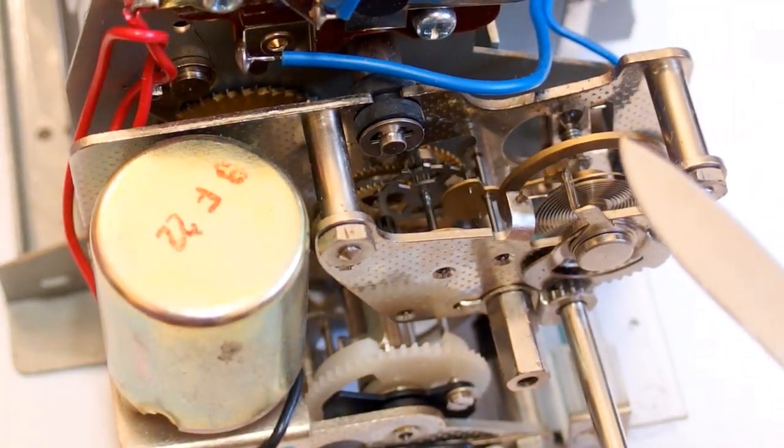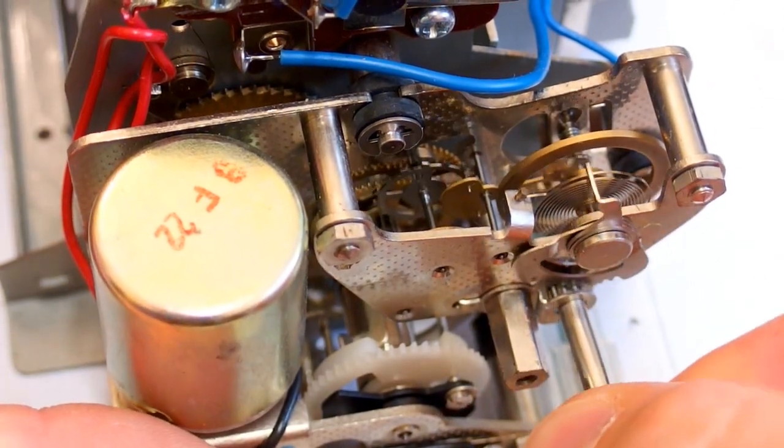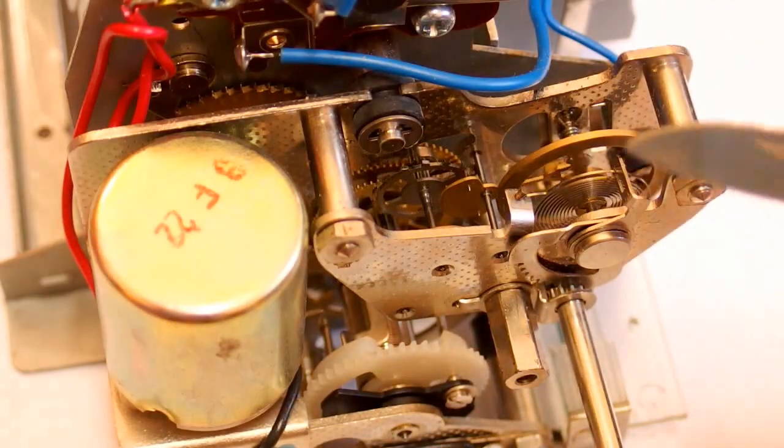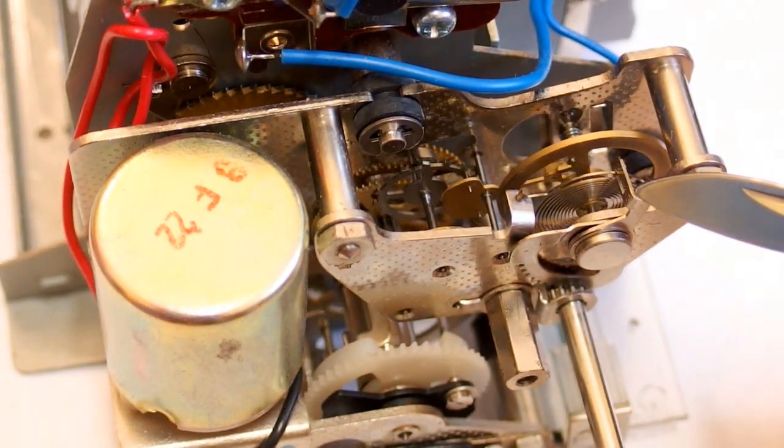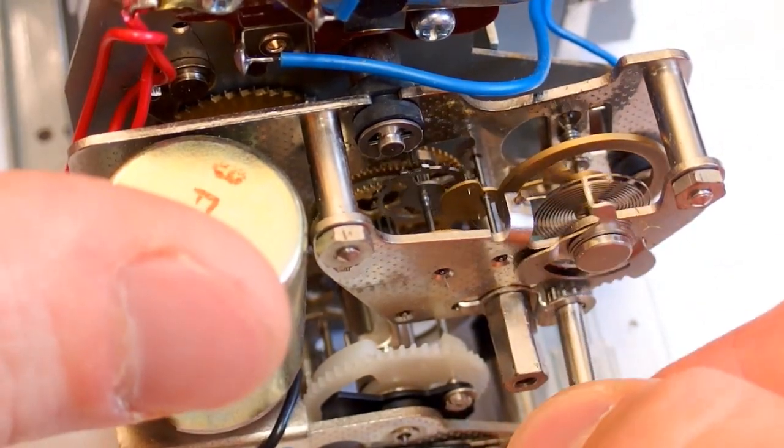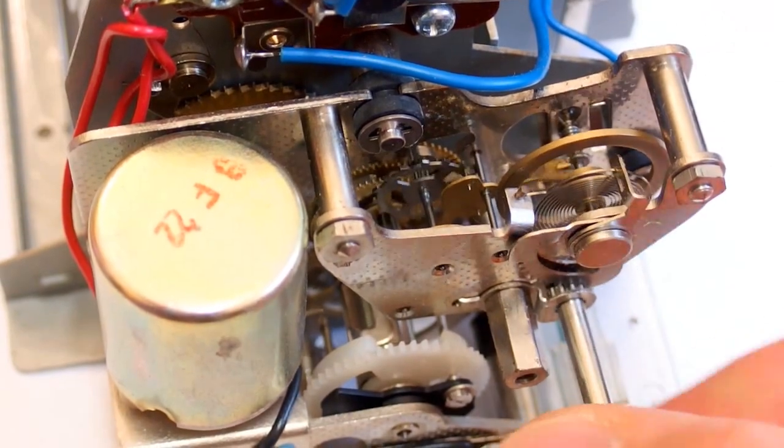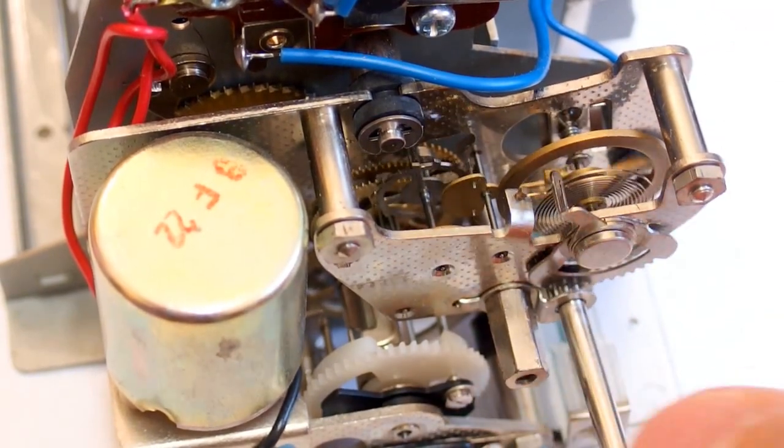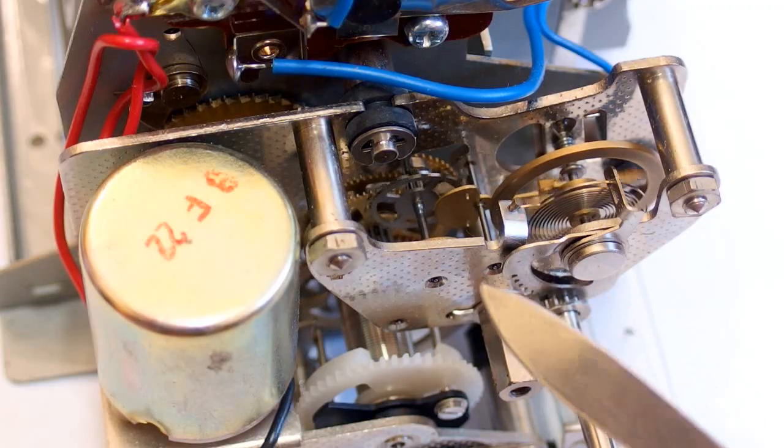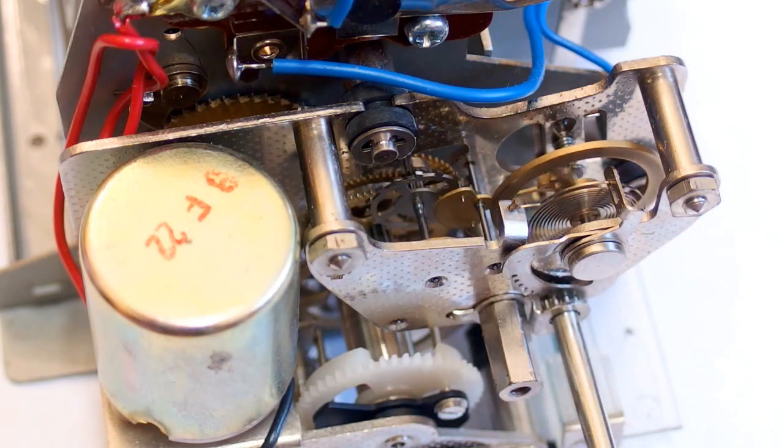Here is the balance wheel, the hairspring and the speed adjustment mechanism. This piece of metal has a gap in it and the hairspring is going through the gap. When you turn it, you can make the spring longer or shorter to make it run slower or faster. Every time the balance wheel moves back and forth, the escape wheel moves by one tooth.